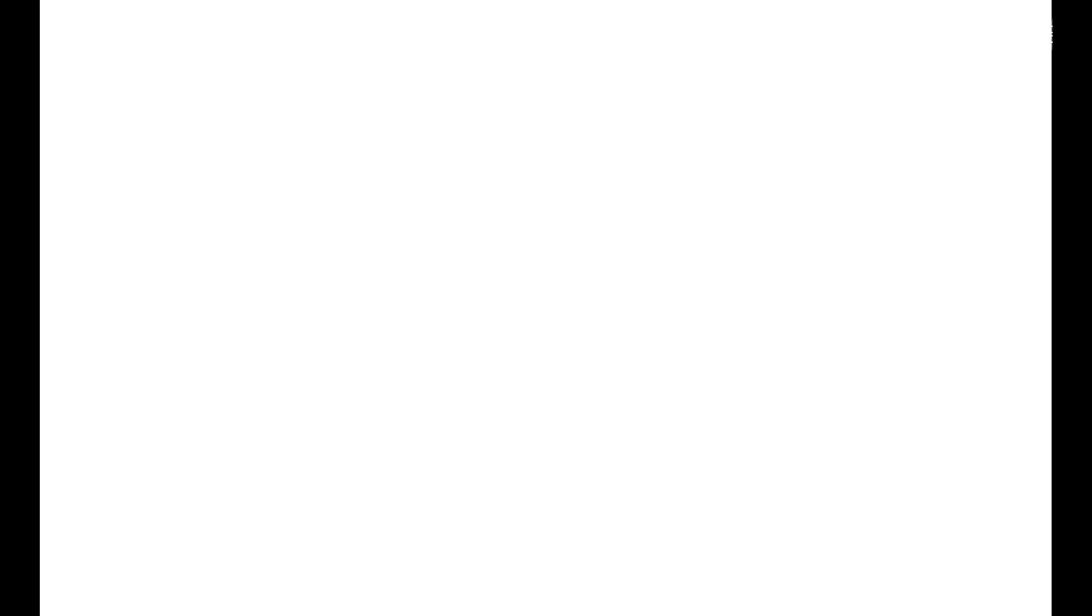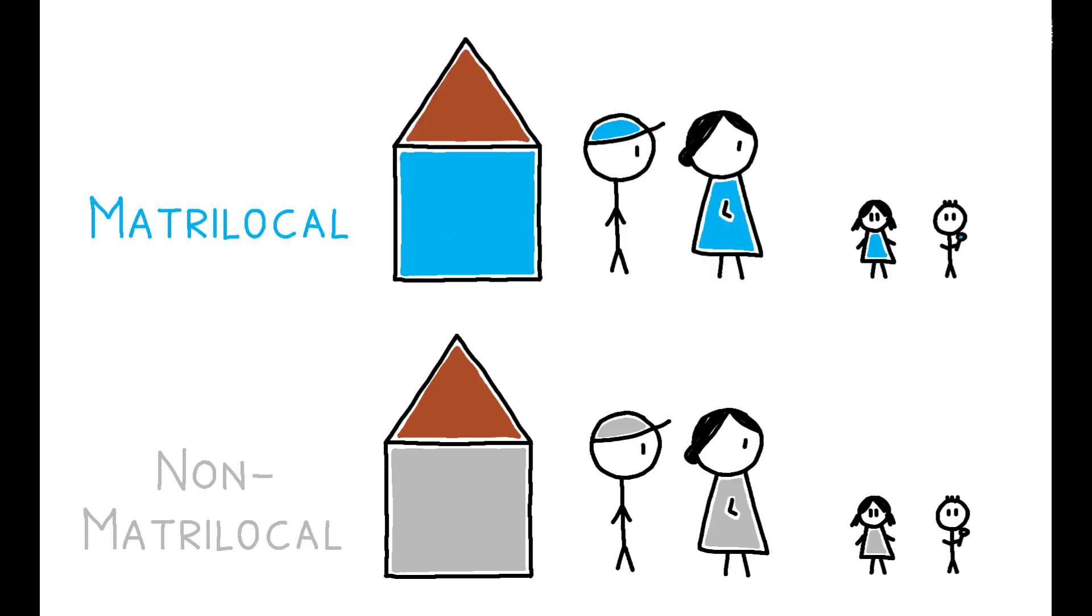Compared to females in non-matrilocal households, those in matrilocal households are 1 to 2 percentage points more likely to be enrolled in school on a yearly basis relative to their brothers. When summed over the 18 years a child could be enrolled in school, this amounts to a gap of 0.14 to 0.38 years of schooling between matrilocal and non-matrilocal females, again, relative to their brothers.